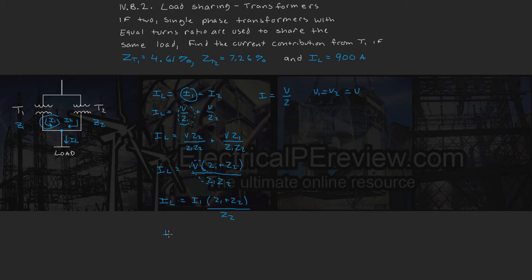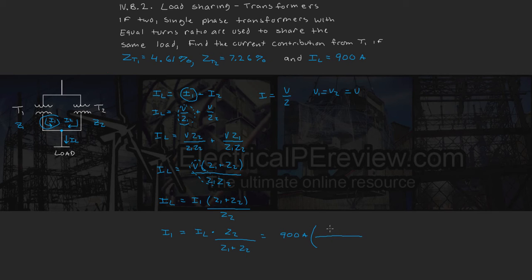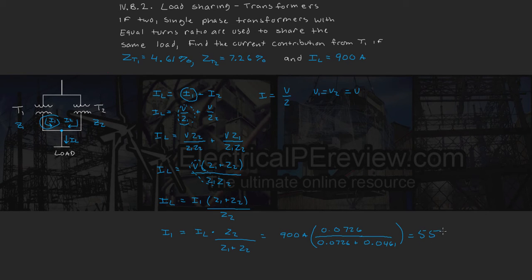Setting this equal to I1, we get I1 equals load current times Z2 over Z1 plus Z2. Plugging in our values: 900 amps times 0.0726, divided by 0.0726 plus 0.0461. Calculating this, we get I1 equals 550.46 amps — that is the current contribution from transformer 1.